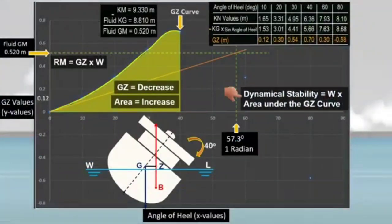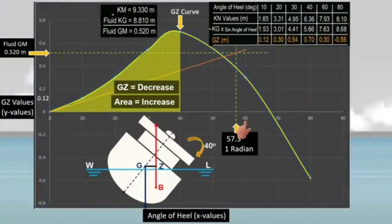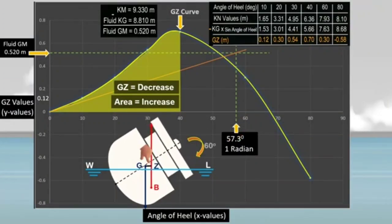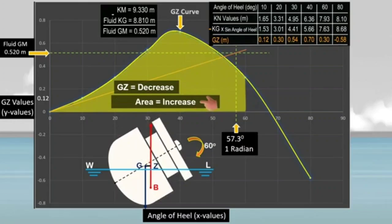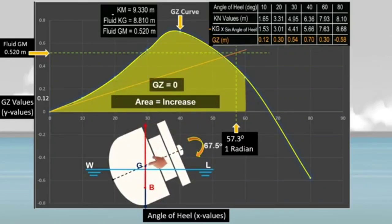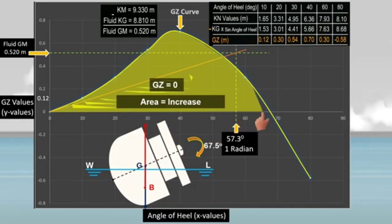As the ship continues to heel at 60 degrees, the righting lever continues to decrease but the area under the GZ curve continues to increase. As the ship heels to 67.5 degrees, she reaches a righting lever of zero, yet the area under the GZ curve still increases.